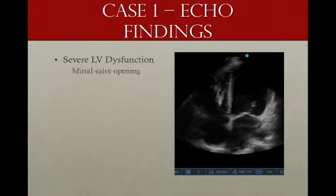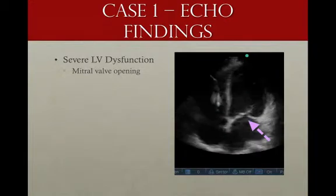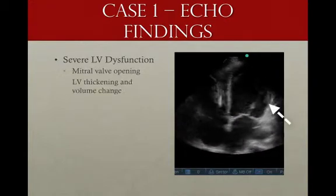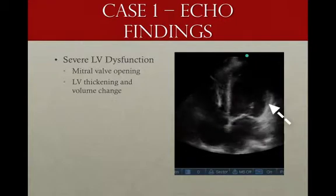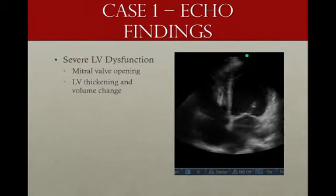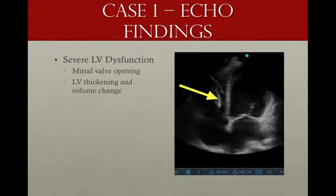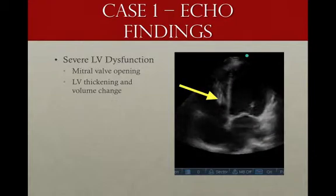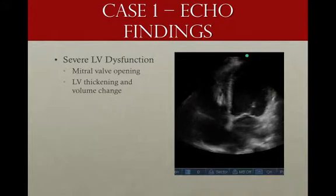Looking more closely at this mitral valve — it's not opening very well. Normally it should be slapping the septum. The left ventricle should be thickening symmetrically, with at least 50–60% volume change, and you don't see any of that here. You can also see a pacer wire in the right ventricle, which is a clue that this patient probably has chronic heart failure.